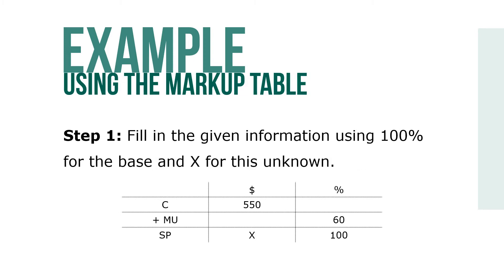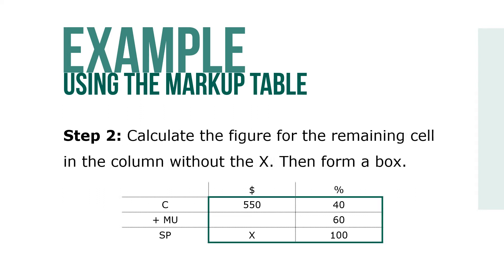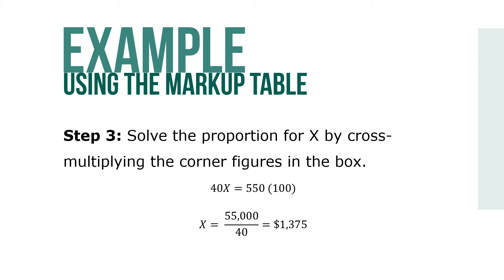We can also use the table to fill in the given information, using 100% for the base and x for the unknown. Calculate the figure for the remaining cell in the column without the x, then form a box. Solve the proportion for x by cross-multiplying the corner figures in the box. In this case, 40x equals 550 times 100, so x equals 55,000 over 40, which equals $1,375.